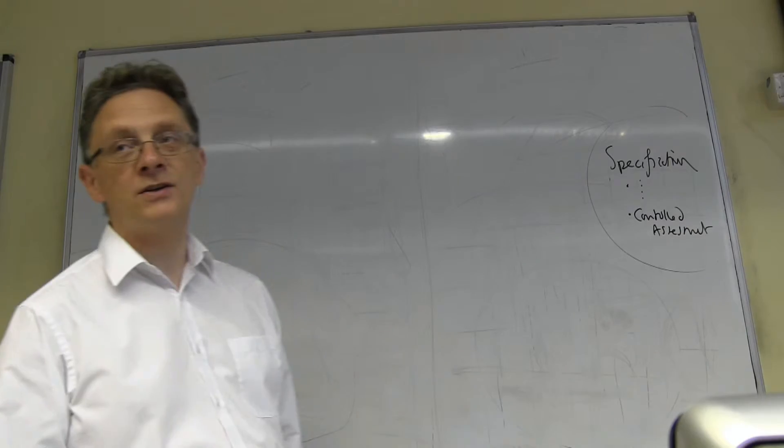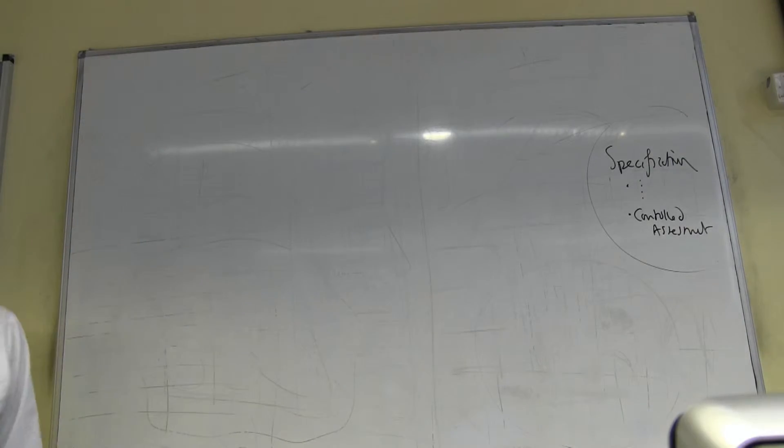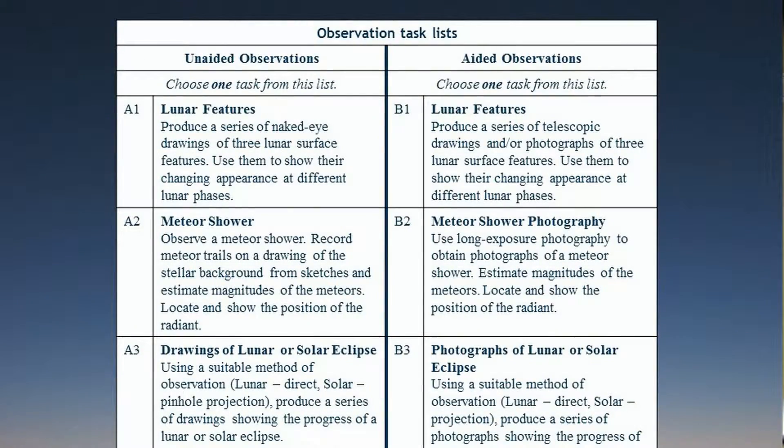One is called an unaided task, that's in list A, which you'll see arranged in front of you there. That basically means naked eye, so you go out and you do something in the sky that just involves your eyes.